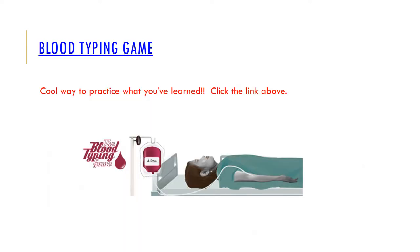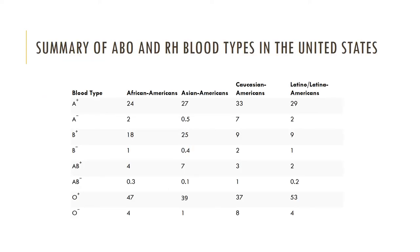Here is a summary of the ABO and RH blood types in the United States — blood types will vary by region. The universal donor is blood type O because when this blood type is injected, it will not agglutinate since there is no antigen present. The universal recipient is blood type AB, as they don't possess any antibodies, so no agglutination of cells will occur.